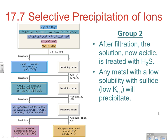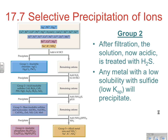After filtration, if we have any group 2 metals — remember our solution is now acidic because we added a whole bunch of HCl — if we treat it with H₂S, any metal with a low solubility with sulfide is going to precipitate out. Group 2 metals are all of the things that under these acidic conditions have a low enough solubility of their metal sulfides to cause a precipitate. So if we get a precipitate here, we know we have one or more of the substances from group 2.